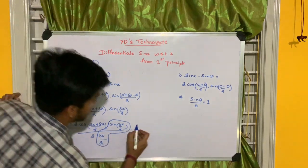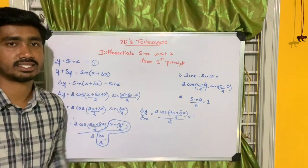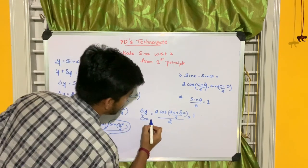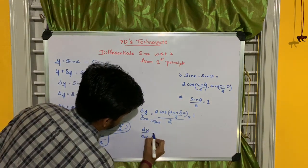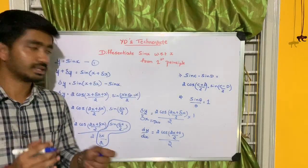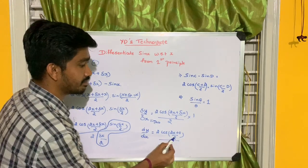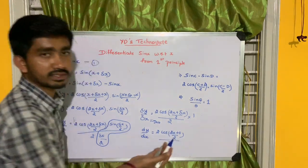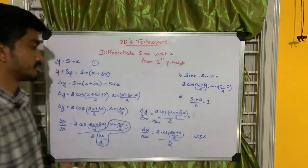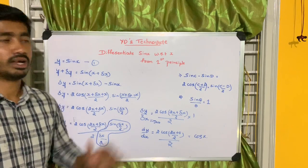Now the equation becomes ready for the last step, that is to apply the limits — apply the limits to 0. Because I have applied the limits, delta x will be 0 and delta y by delta x will be changed to dy by dx. Simply cancel the 2s. So x plus 0 is x itself, cos of x is cos x. The differentiation of sine x is cos x, derived with the help of first principle.